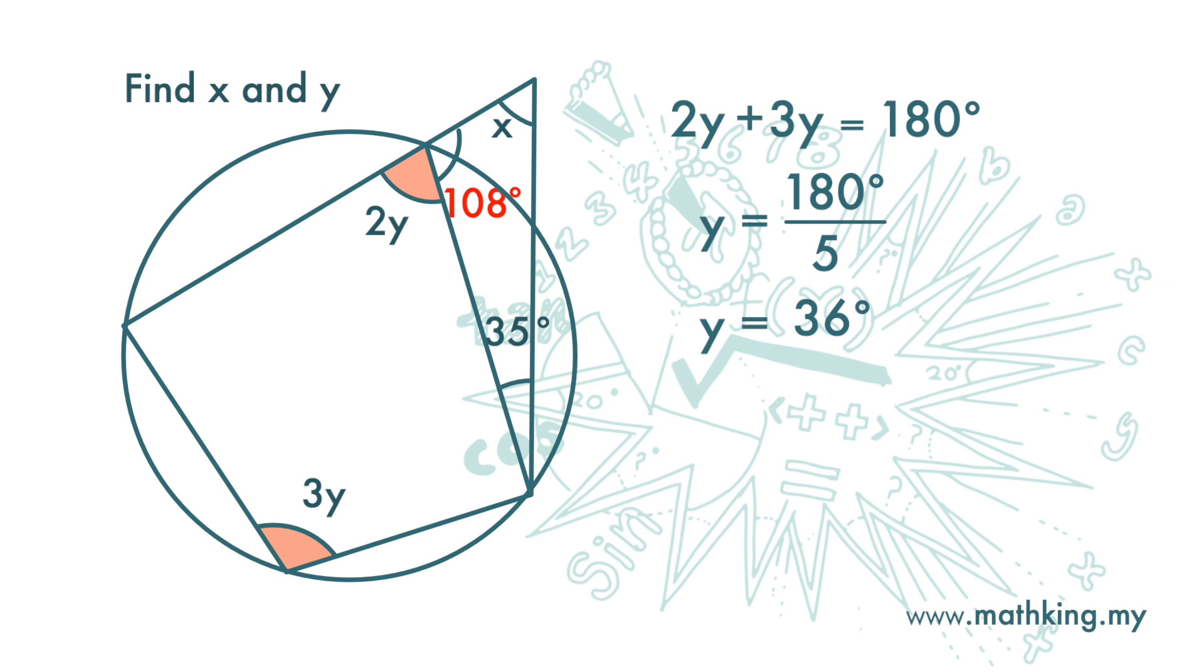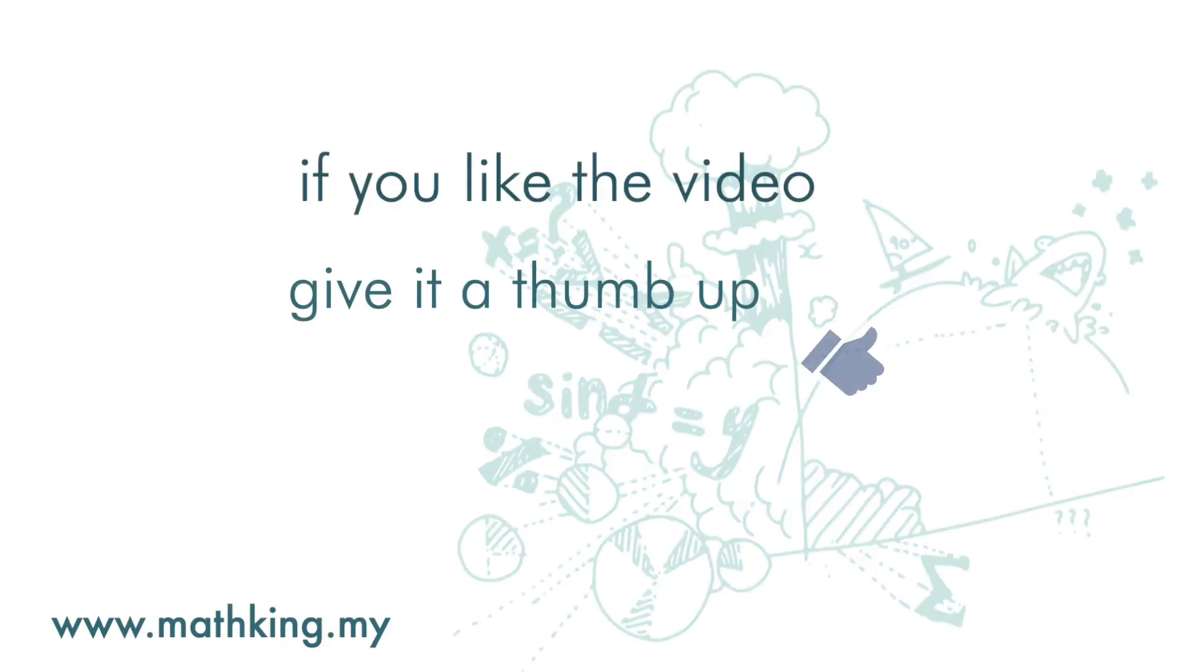Next, let's look at this triangle. The sum of interior angles of a triangle is 180 degrees. So x is 180 minus 108 minus 35. So x is 37 degrees.